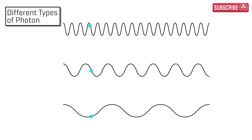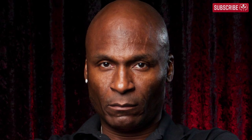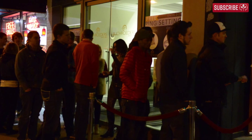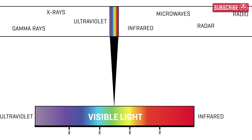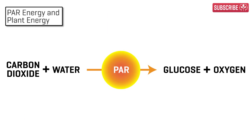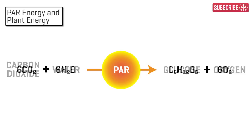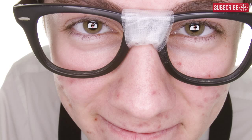Photons, in case you're wondering, are just discrete packets of energy carried along electromagnetic waves. You can have x-ray photons, infrared photons, even radio photons. But a PAR meter, like our beloved bouncer dude, is very selective — just as he won't count you in for wearing those vintage Adidas sneakers. A PAR meter only counts photons traveling at certain wavelengths, typically between 400 and 700 nanometers. This is the band of radiation that both the human eye can see and plants are able to use to fix carbon dioxide from the air and bind it with water in order to produce glucose and oxygen — a process known as photosynthesis!